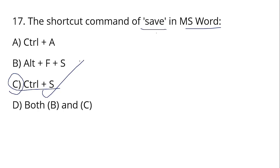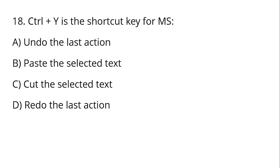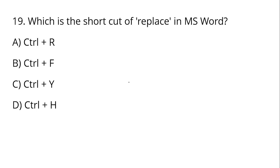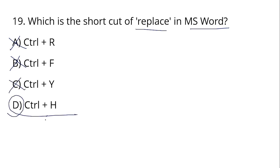Control+Y is the shortcut key in MS — Microsoft — for Redo, and Ctrl+Z is for Undo. So Ctrl+Y performs Redo (the last action) and Ctrl+Z performs Undo. For Replace in MS Word, the shortcut is Ctrl+H — not Ctrl+R. Ctrl+H opens Find and Replace for replacing text.